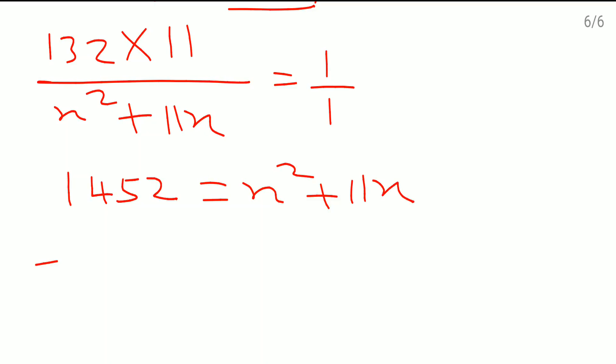Now I will bring everything to this side: minus x square minus 11x plus 1452 which is equal to 0. Now I will change the sign of each term, or multiply every term by minus 1. So it is x square plus 11x minus 1452 which is equal to 0.